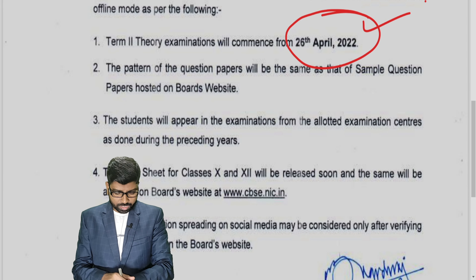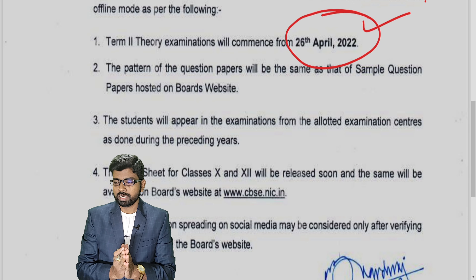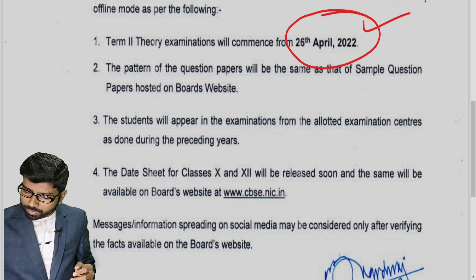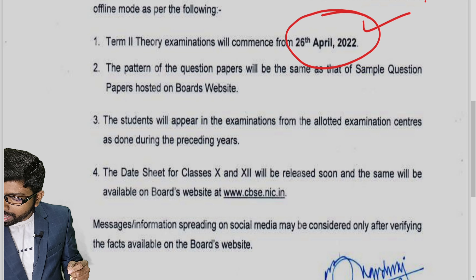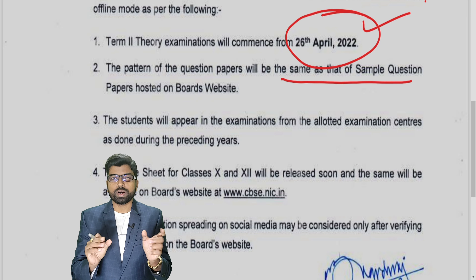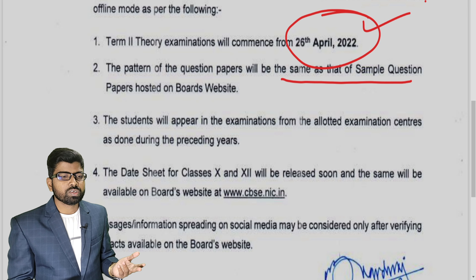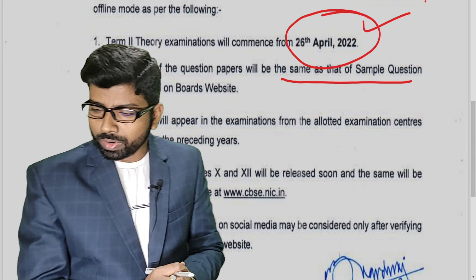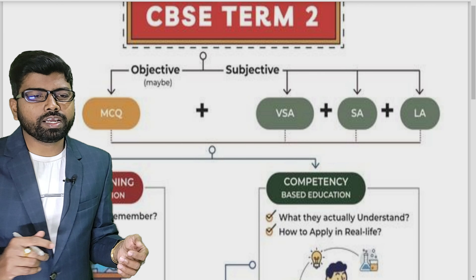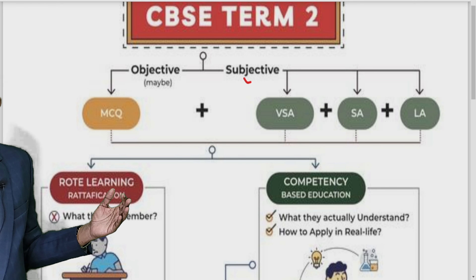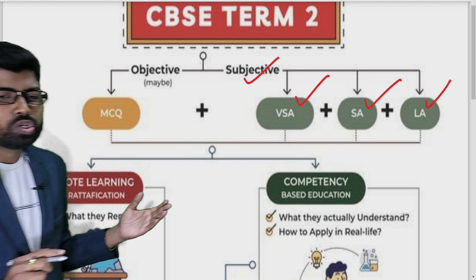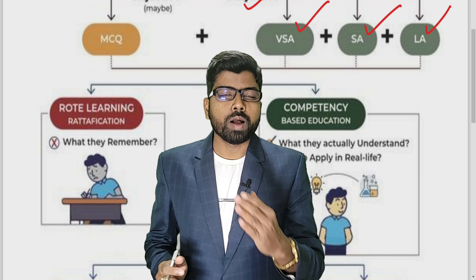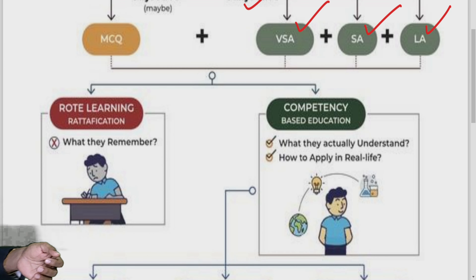Regarding the pattern of the question paper — all of you are eagerly waiting for your Term 1 result; we will discuss that shortly. The pattern of the question paper will be the same as given in the sample question paper on the CBSE site, which contains subjective questions. In subjective questions there will be very short answer, short answer, and long answer — three types of questions. In Term 2 we are starting the competency-based education system, so rote learning is going to be over completely.